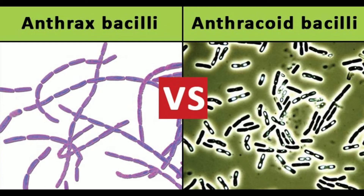Anthrax bacilli vs. anthrachoid bacilli: 25 differences. The saprophytic organisms which simulate the anthrax bacillus closely, both in their morphological and cultural characters within the group of gram-positive aerobic sporing bacilli, are termed as anthrachoid bacilli. They have a general resemblance to anthrax bacilli, such as producing dry wrinkled colonies and in the smear appearing as chains of spore-bearing gram-positive bacilli.